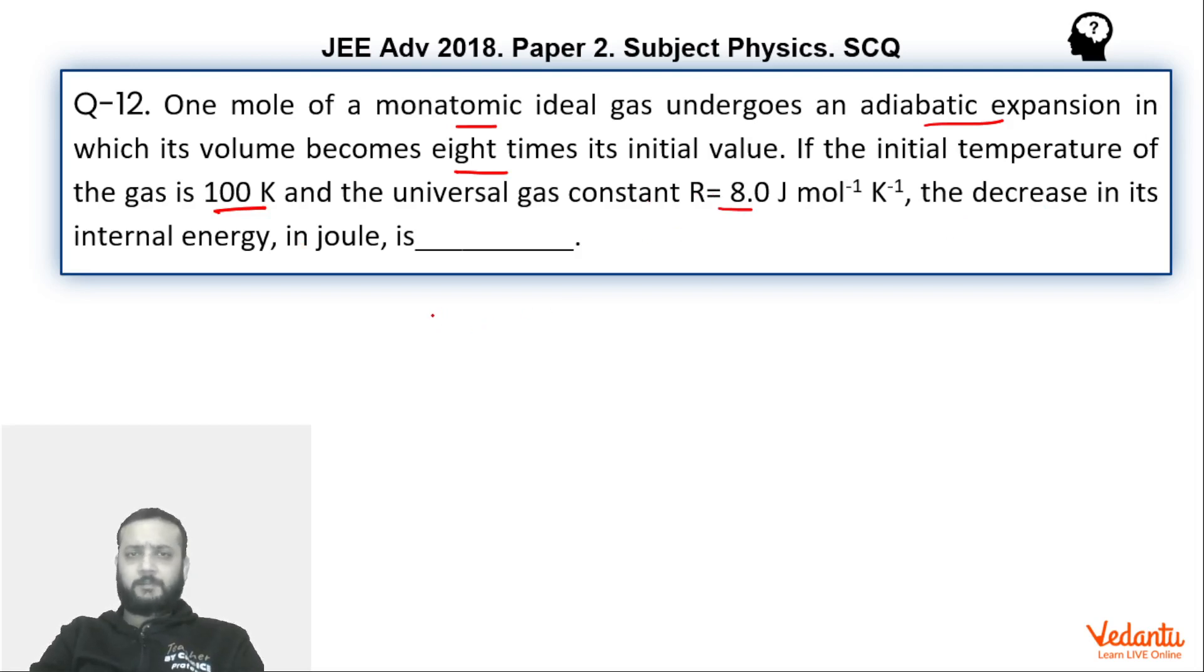The question is fairly simple. For an adiabatic process, PV^γ remains constant. Now if you convert P as nRT/V, you can write nRT/V times V^γ equals constant. So this means T times V^(γ-1) is constant.